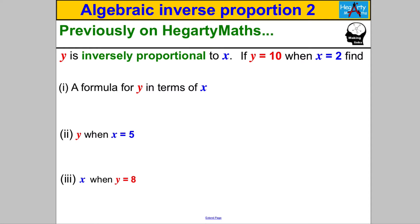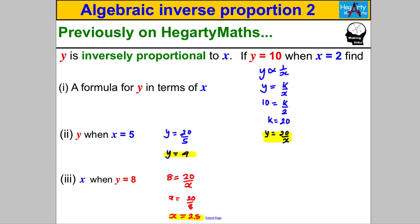You need to be able to answer a question like this, so pause the video and have a go. Hopefully you would have got the following: y was 20 over x, and then using that I got that y was 4 when x was equal to 5, and I got that x was equal to 2.5 when y was equal to 8.